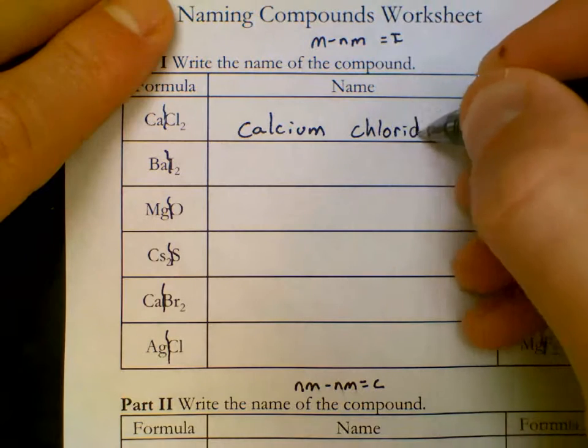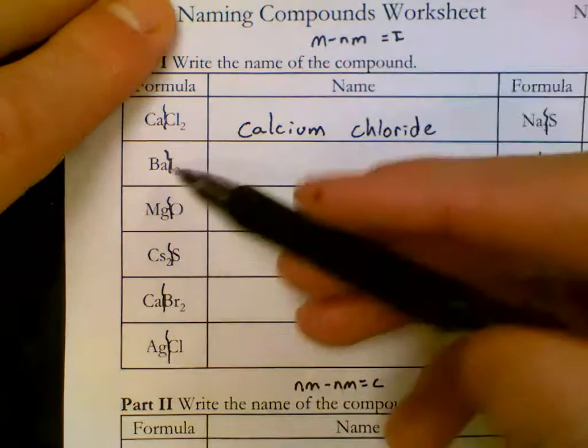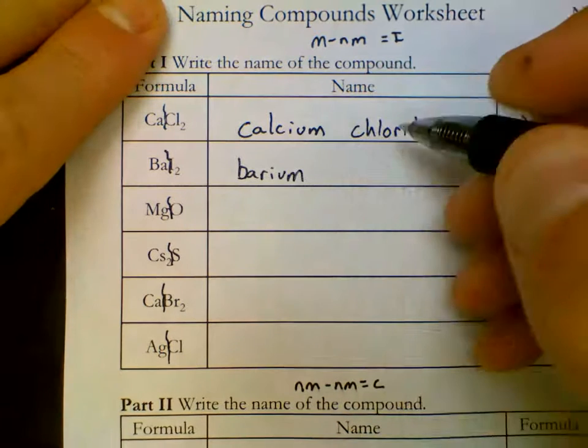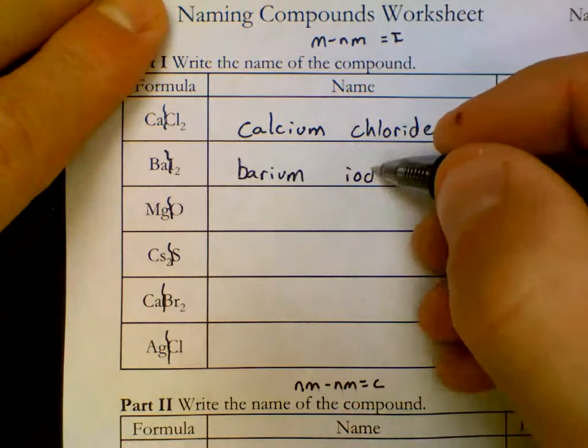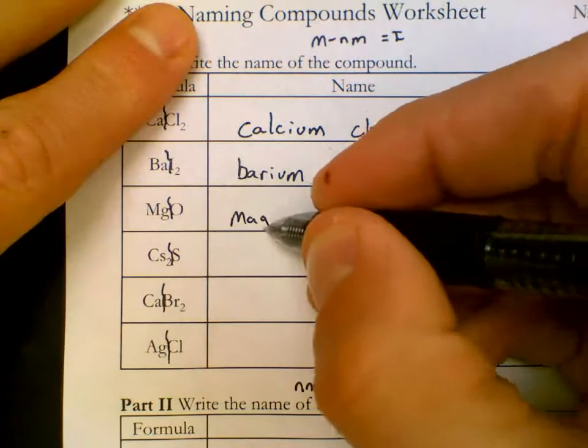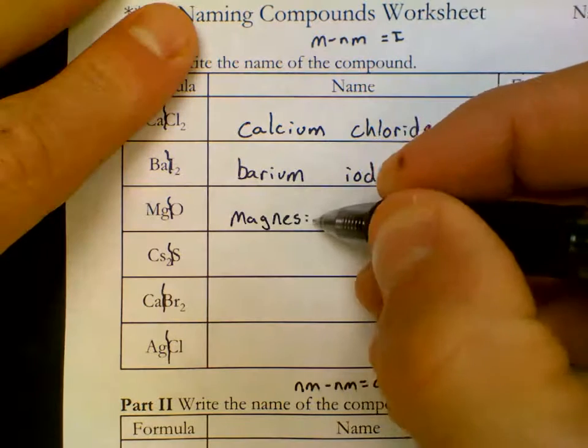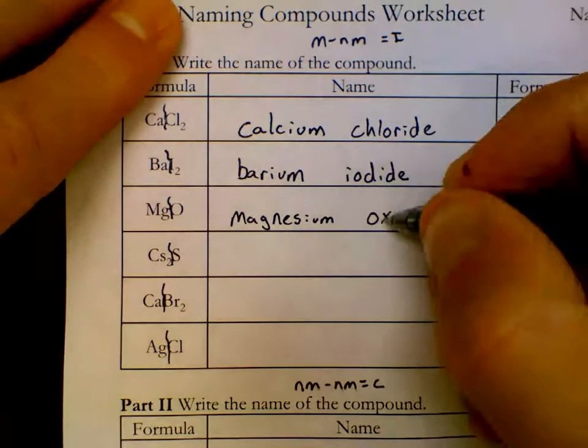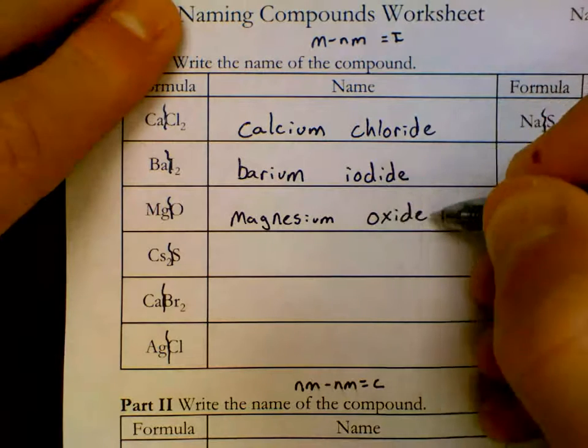Cl is called chloride. Notice for ionic we don't care about the subscript. Ba is barium. I is iodide. Don't care about that subscript. Mg is magnesium. Full first name. Do not change the name of the first atom on any compound. O is going to be oxide. Oxygen to oxide.